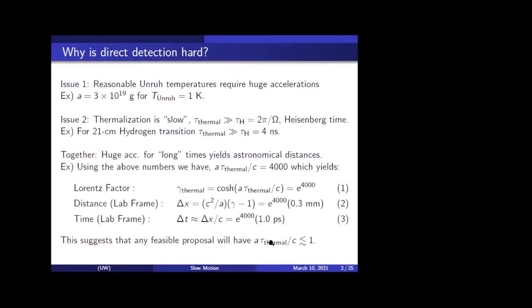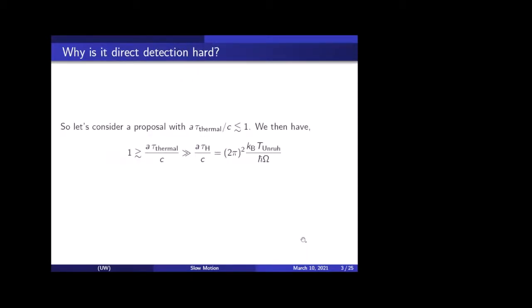So from the rest frame of the detector to its final frame, once it's done thermalizing, you have to have a Lorentz factor between those two frames of e to the 4,000. And this propagates through into the distances and times in the lab frame. The distance is e to the 4,000 millimeters and the time is e to the 4,000 picoseconds. Even though this time is small for the probe, the proper time is small, the lab time is just absolutely huge if you want to do any direct detection along these lines.